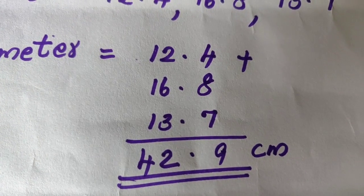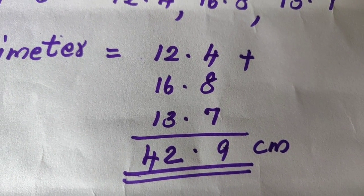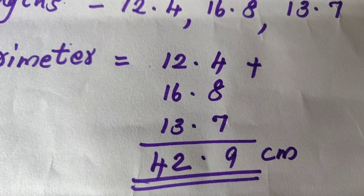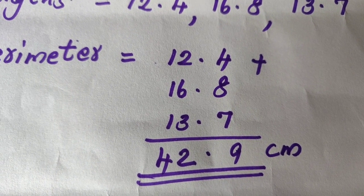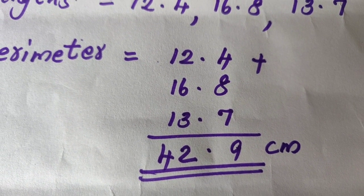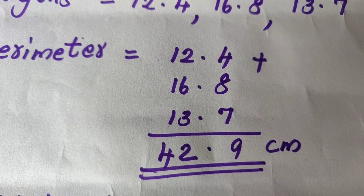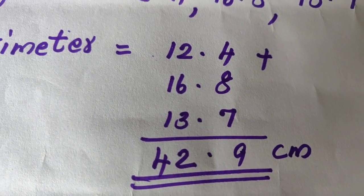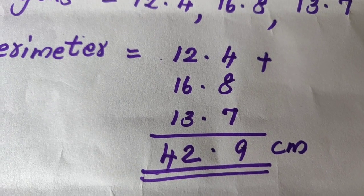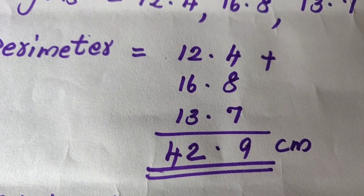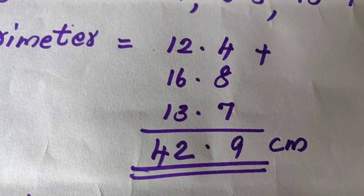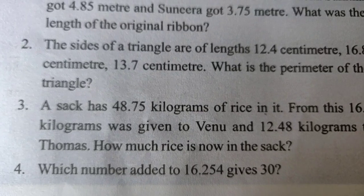Adding the three sides: 4 plus 8 plus 7 is 19, carry 1; 2 plus 6 plus 3 plus 1 is 12, carry 1; then 1 plus 1 plus 1 plus 1 is 4. The perimeter of the triangle is 42.9 cm.